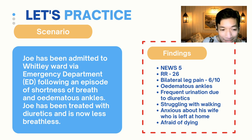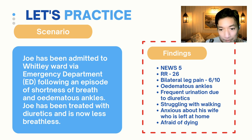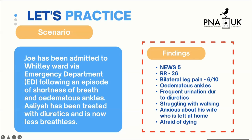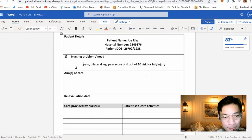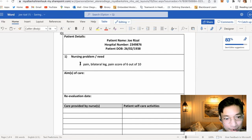In the UK, people commonly call diuretics 'water tablets.' Additional findings: the patient is struggling with walking, is anxious about his wife left at home, and is afraid of dying. Based on these findings, the first problem is bilateral leg pain with a pain score of six out of ten. The second problem we will work on is risk of fall.